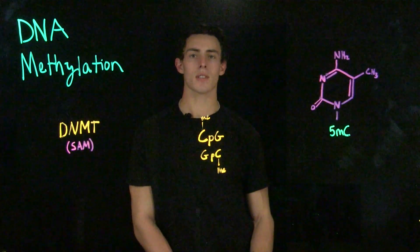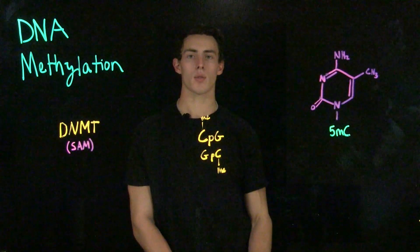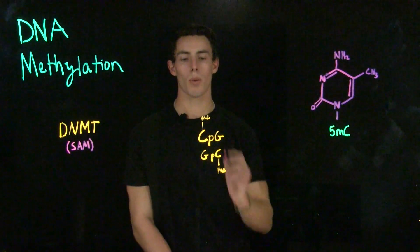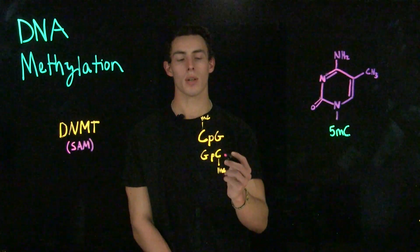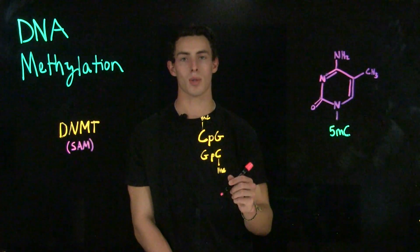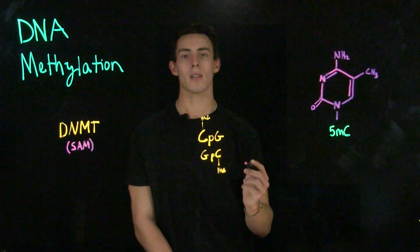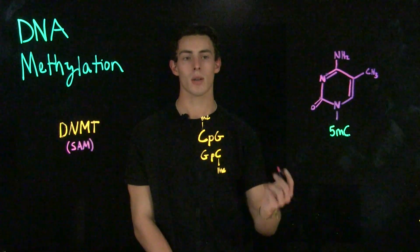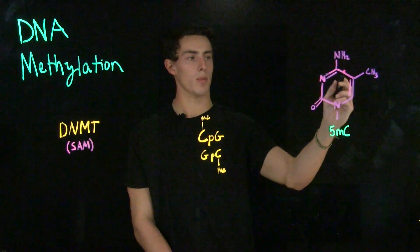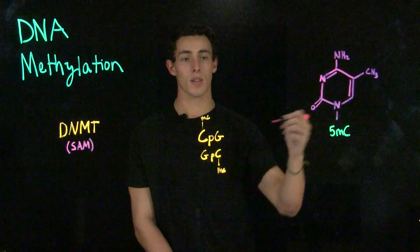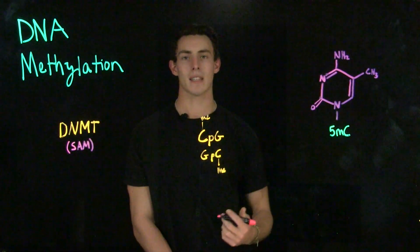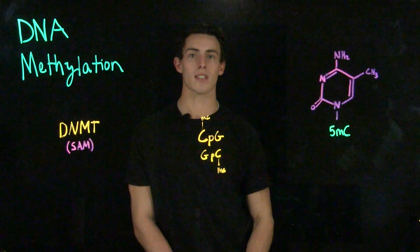5-methylcytosine is going to decrease the affinity of a transcription factor to bind to a specific region of DNA. Thus, when we have CpG islands near a promoter that are methylated by DNA methyltransferase, we're going to decrease transcription. However, if we have a methylated area and we need to transcribe that gene, we may recruit DNA demethylases, which remove these methyl groups from carbon-5 of cytosine, giving us regular cytosine, which allows our DNA-binding proteins to bind and allows us to resume transcription of that gene.